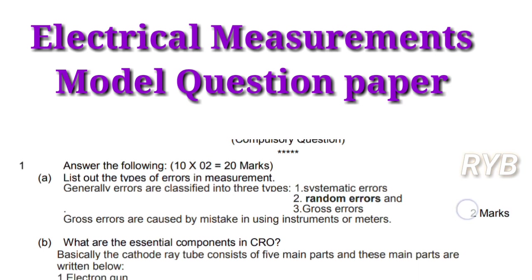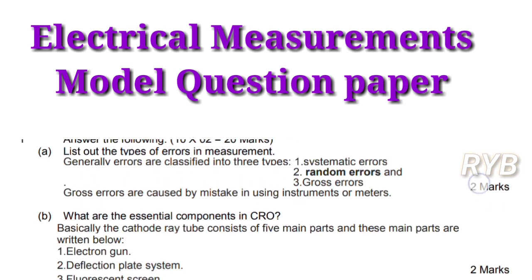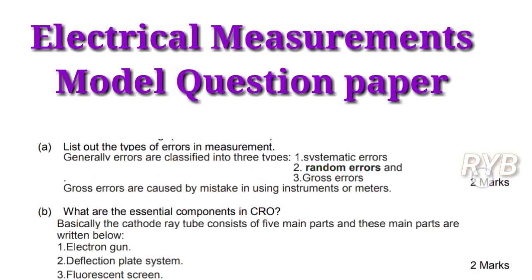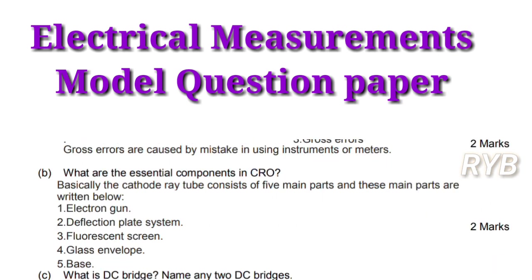Next, what are the essential components of CRO? The cathode ray oscilloscope mainly has five parts: electron gun, deflection plate system, fluorescent screen, glass envelope, and time base. If you write four parts you will get two marks. If you are able to draw a block diagram of CRO simply by pen, you will get two marks.